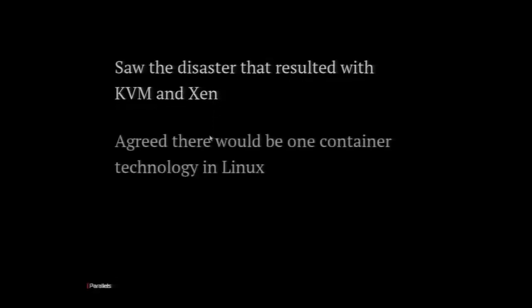We also saw the disaster that resulted from KVM and Xen — both exist as Linux hypervisor technology, but inside the kernel they're fully separate subsystems that share almost no code. This forces you to choose, and for the enterprise, choice can sometimes be a bad thing. So we all came together and agreed that there would only be one container technology in Linux — one underlying technology for containers. It involved a lot of very painful choices because all the out-of-tree technologies had their own stuff that replicated what was in tree. We agreed we would work together to strengthen the in-tree technology and make it the de facto way that containers work in Linux.